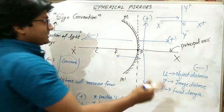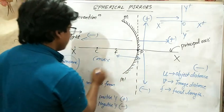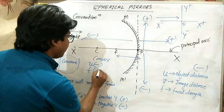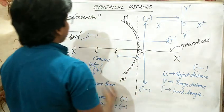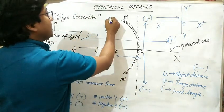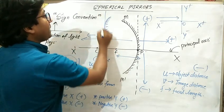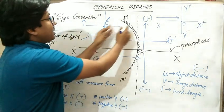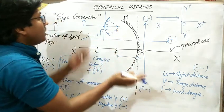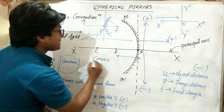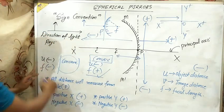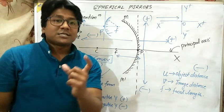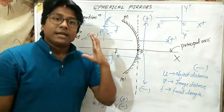All distances are measured from the pole. For a concave mirror, since focus is on the left (negative x side), the focal length f is negative. For a convex mirror, the focus is on the right side of the pole (positive direction), so the focal length is positive. For both cases, the distance of the object from the pole must be taken as negative.